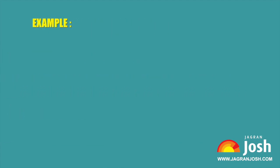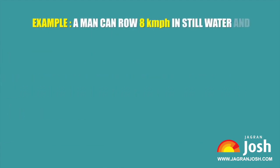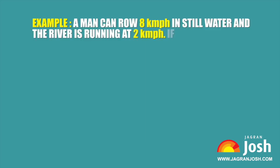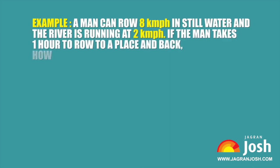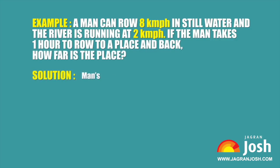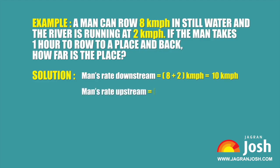Example: A man can row 8 km per hour in still water and the river is running at 2 km per hour. If the man takes 1 hour to row to a place and back, how far is the place? Solution: Man's rate downstream is equal to 8 + 2 = 10 km per hour. Man's rate upstream is equal to 8 − 2 = 6 km per hour.